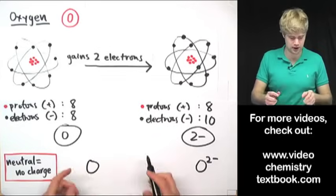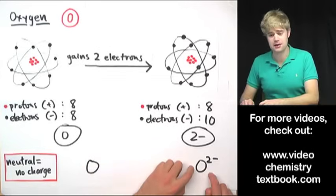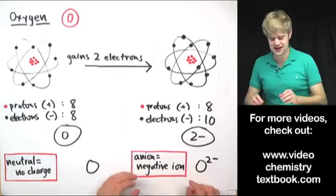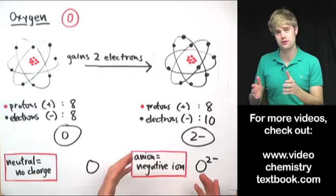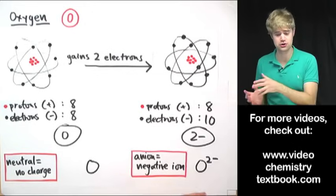I can write the symbol for this ion as O 2 minus to show that it has a 2 minus charge, whereas this neutral guy over here I can just write O. This is an ion because it has a charge and there's a specific name for it. We can call this an anion which is the word that we use to describe a negatively charged ion that has more electrons than protons.